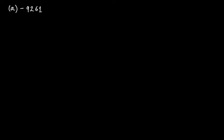In our previous video tutorial we learned how to find the cube roots of negative numbers. In this video tutorial let's solve some problems related to that topic. We have the number minus 9261 and we have to find out the cube root of this number. Minus 9261 can be written as minus 1 multiplied by 9261.